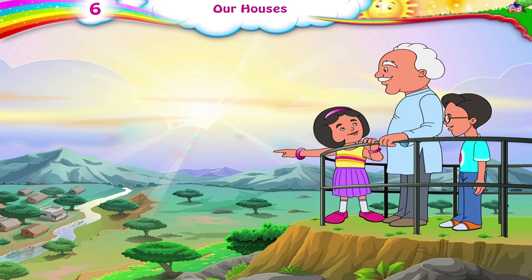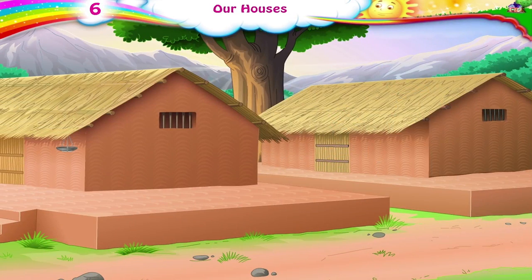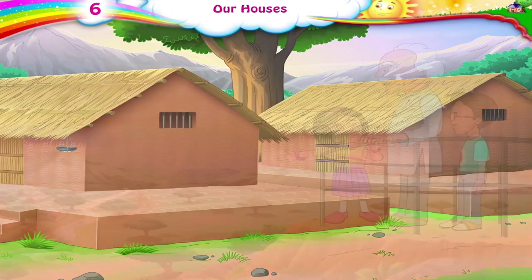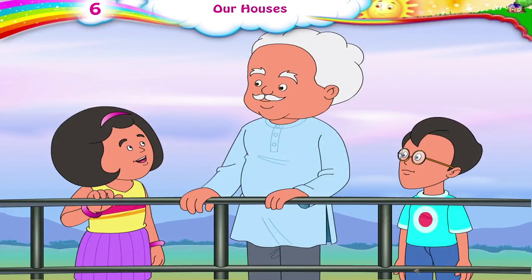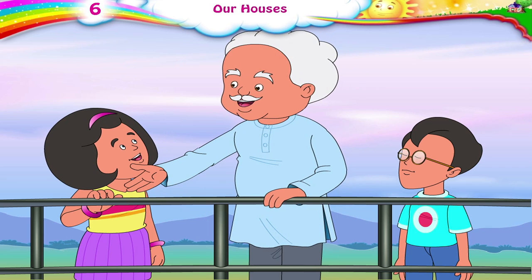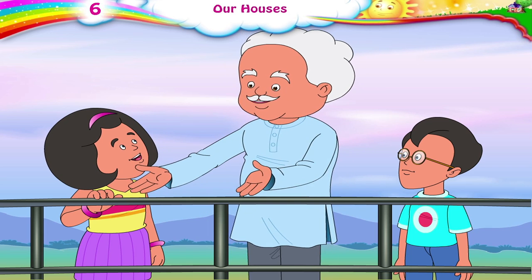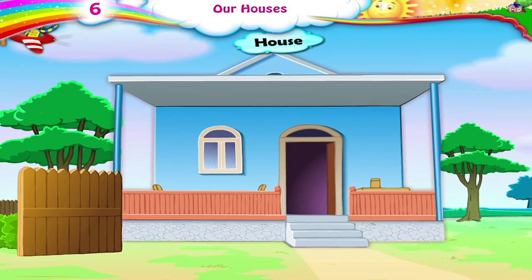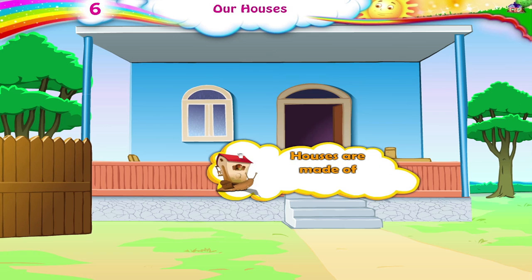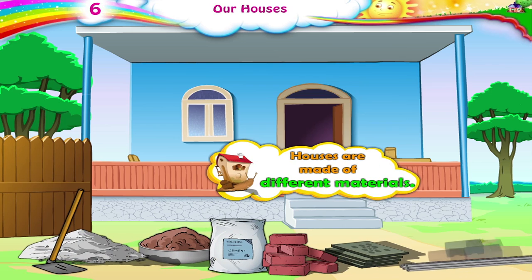Look at those tiny houses in the distance, Dadaji. They look so nice. Are their roofs made of straw? Can we go and see them? Yes, Riya. Those are huts. Huts are houses. We all live in houses. Houses are made of different materials.